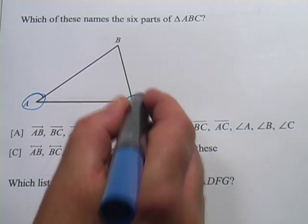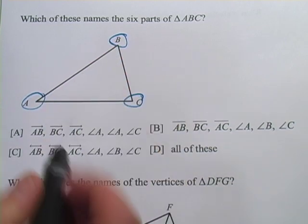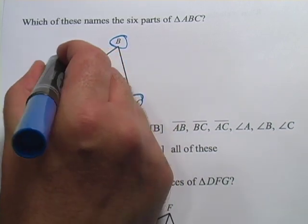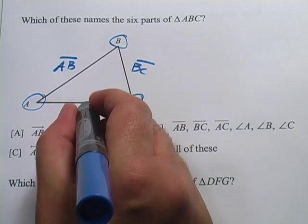and then the other parts are the line segments that connect the vertices. So segment AB, segment BC, and segment AC.